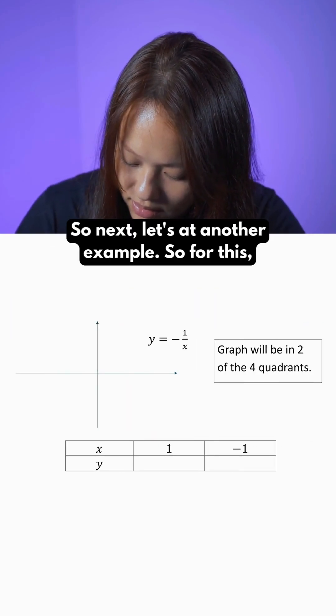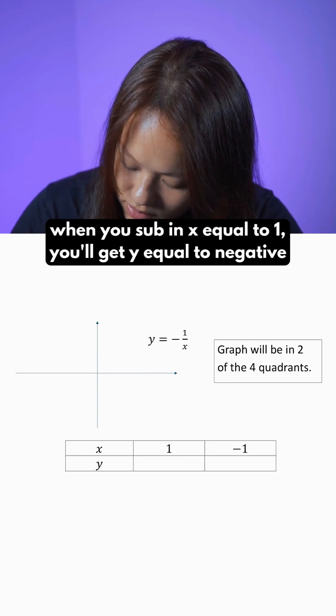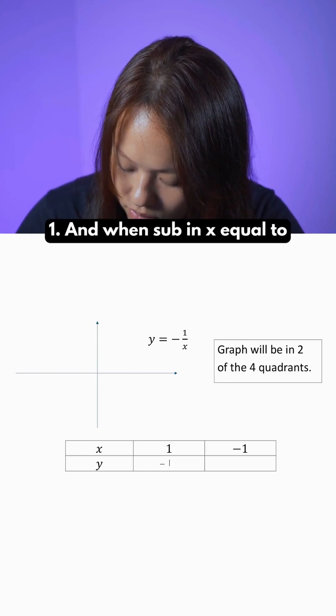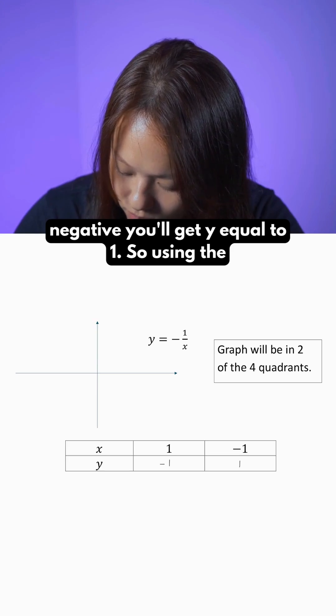So next, let's look at another example. For this, when you sub in x equal to 1, you'll get y equal to negative 1. And when you sub in x equal to negative 1, you'll get y equal to 1.